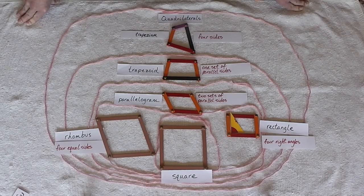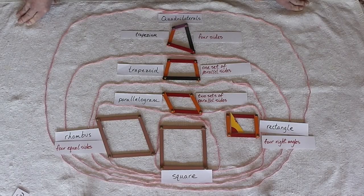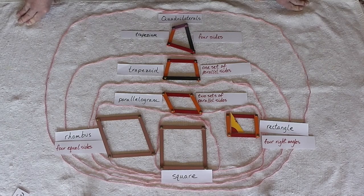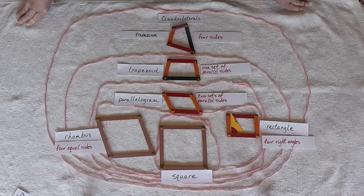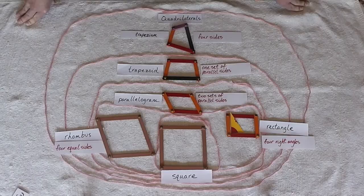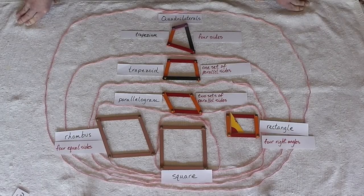A parallelogram can be a trapezoid. But a trapezoid can't be a parallelogram. A square can be a trapezoid. But a trapezoid cannot be a square.